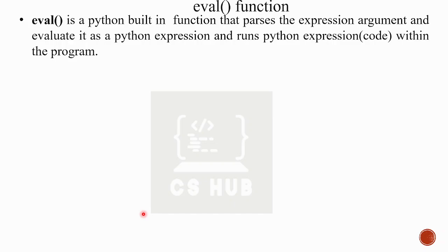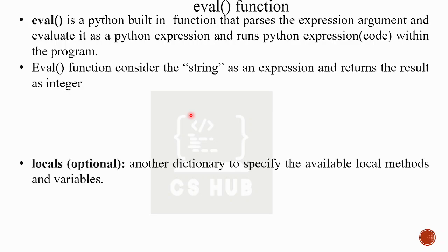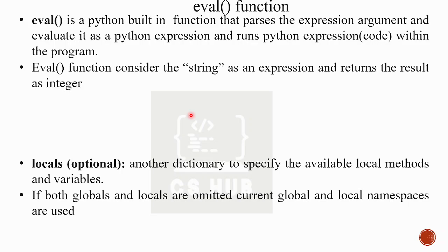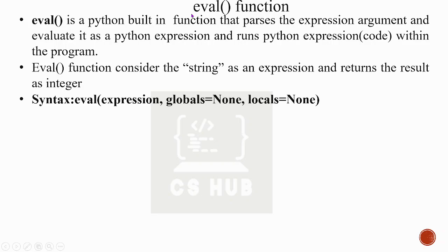The next function is eval(). It is a built-in function. It takes an expression, then parses and evaluates it as a Python expression within the program. We pass a string, and the function evaluates the result. If we consider a string as an expression, it returns the result as an integer.